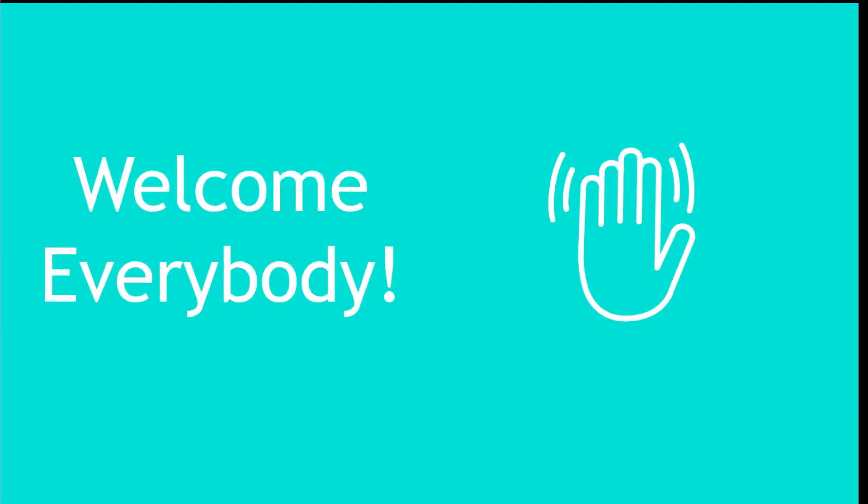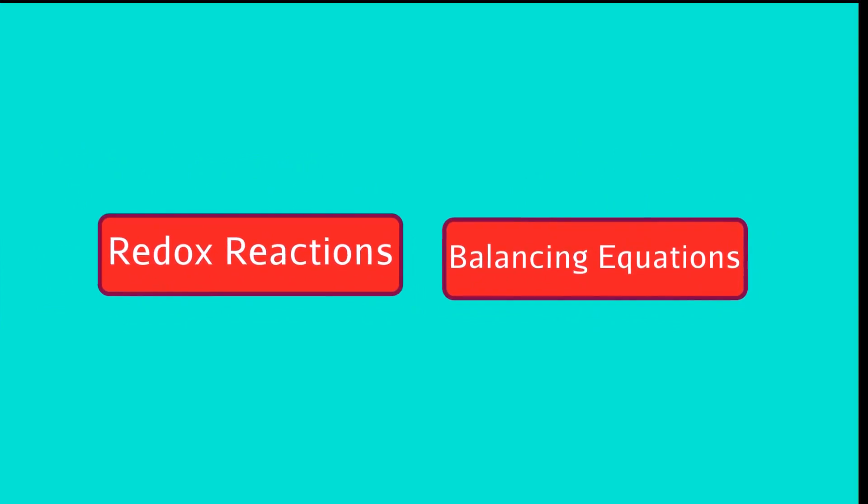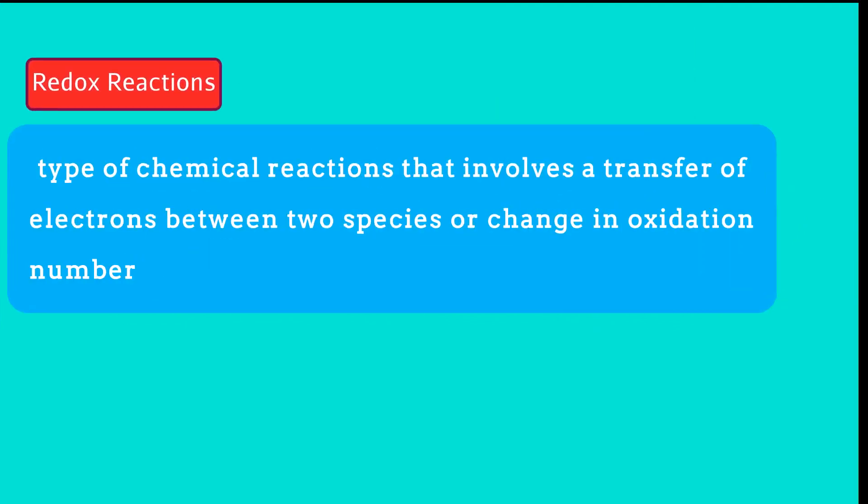Welcome everybody. In this video we are going to talk about oxidation-reduction reactions and balancing equations. Redox reactions are a type of chemical reactions that involves a transfer of electrons between two species or change in the oxidation number.